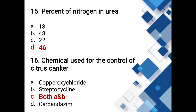Percent of nitrogen in urea: options 18%, 48%, 22%, 46%. The answer is 46% — nitrogen is present at 46% in urea.